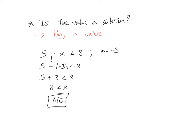If you just put 5 minus 3, you know you forgot one of the minus signs, you'd get 2 is less than 8 and then you'd say yes it is a solution. So big difference there.